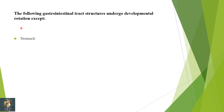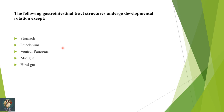Next: which gastrointestinal tract structures undergo developmental rotation except — stomach, duodenum, ventral pancreas, midgut, or hindgut? The stomach rotates along two axes; the duodenum is part of the midgut which rotates around the superior mesenteric artery; the ventral pancreatic bud also rotates around the duodenum to lie behind the dorsal pancreatic bud. The hindgut is the only option that does not show any developmental rotation.